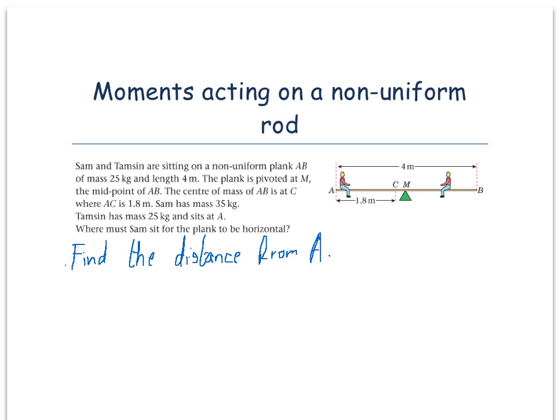The first step with any moments question is to identify the key points in the question. So we are told the rod has mass 25 kg and is 4 m in length. We are also told that the distance from AC is 1.8 m, the mass of Sam is 35 kg, and the mass of Tanzim is 25 kg who sits at A.